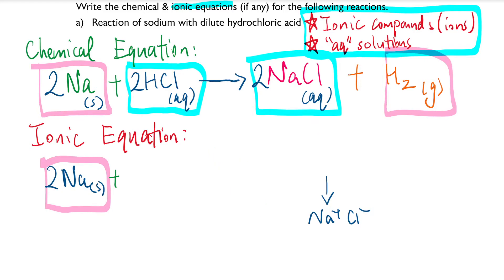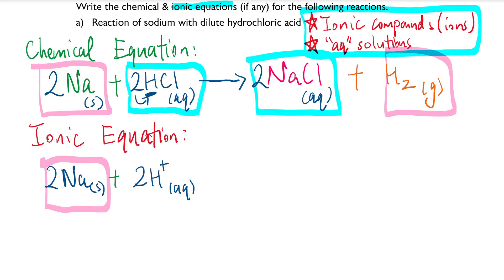One thing to pay attention to is you need to add back the coefficient. For HCl with a coefficient of 2, remember there's an imaginary bracket, so it's 2 times everything inside. That gives you 2H⁺ (aq) and also 2Cl⁻ (aq), because the 2 applies to both the hydrogen and chlorine atoms.